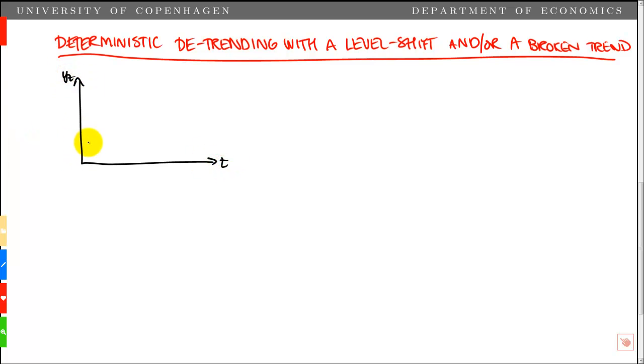Assume we have variable yt which looks something like this. This could be a case where we have a linear trend and a level shift at some point in time, which we could denote t0, and then we have a new trend afterwards. So this is a process with a level shift and a broken trend, with a break occurring exactly at t0.